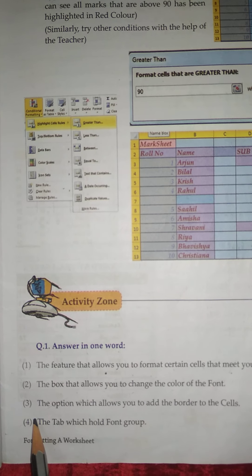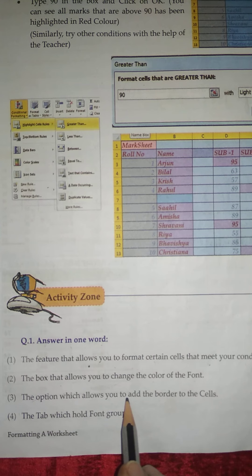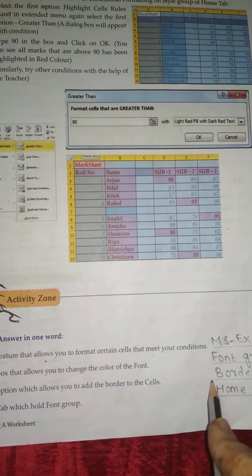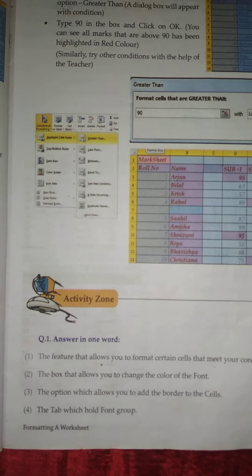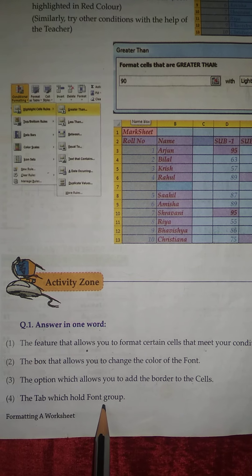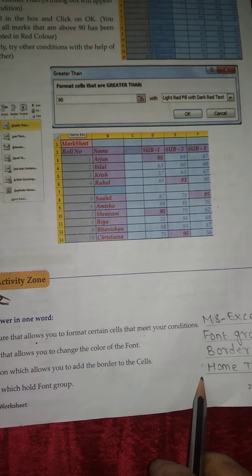Number three: the option which allows you to add the border to the cell - Border. Number four: the tab which holds Font Group - Home Tab.